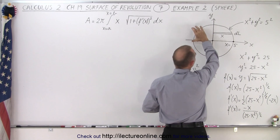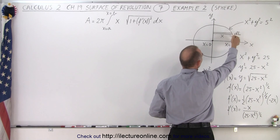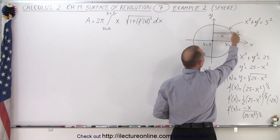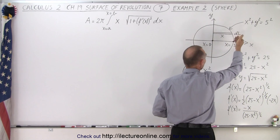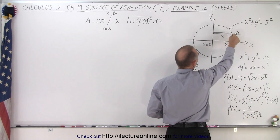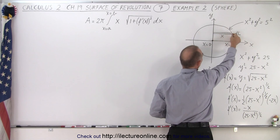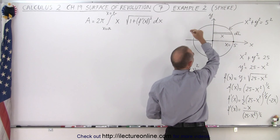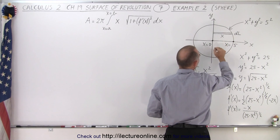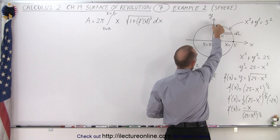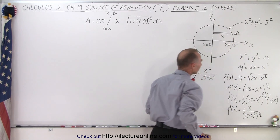We're going to do just the top half of the sphere. Notice we have a small segment along the edge of the sphere defined by x squared plus y squared equals five squared — the equation of a circle. We take that small arc length dl and revolve it around the y-axis. The radius is going to equal x, which changes from zero up to the full radius of five.